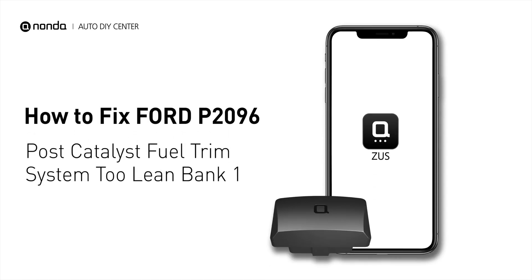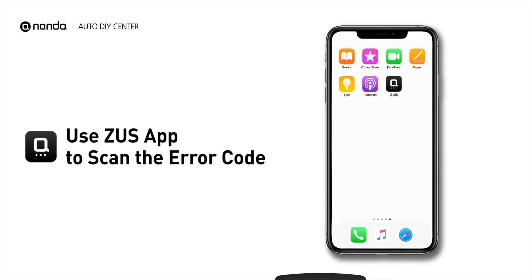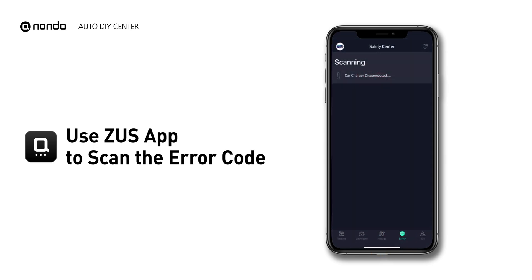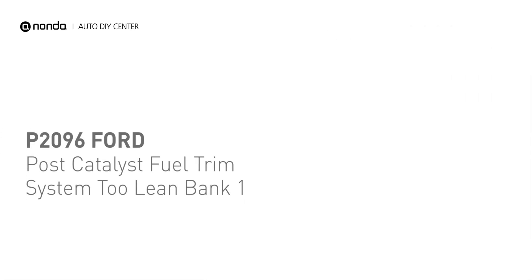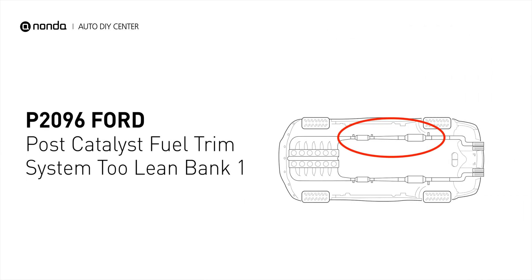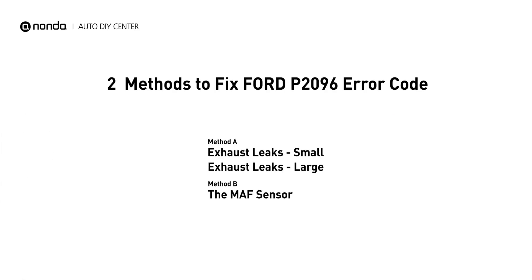This P2096 repair video is dedicated to Ford drivers. If your Ford is getting a P2096 error code, this video will show you two practical solutions to fix it at home. Use the Zeus app to scan your vehicle and see the error code P2096. It indicates the powertrain control module perceives a lean fuel-to-air mixture downstream of the catalytic converter. Here are two of the most practical solutions to fix Ford's P2096 error code.